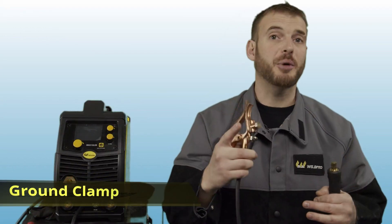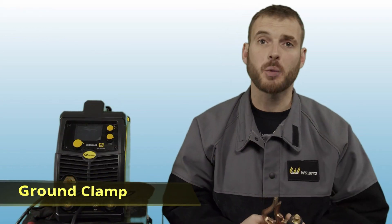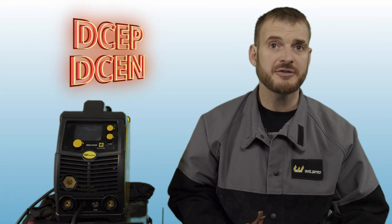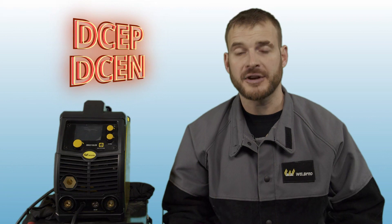Let's go ahead and hook up our ground clamp first. Now depending on the stick welding process you'll be doing you may need DC electrode positive or DC electrode negative. Normally with stick you'll be welding on DC electrode positive especially if you're running your standard 6011 or 7018 electrodes.